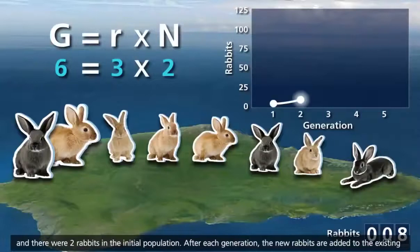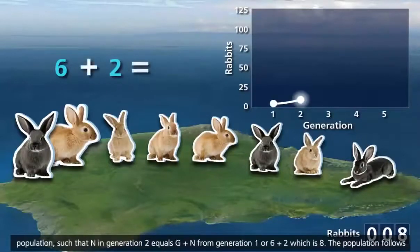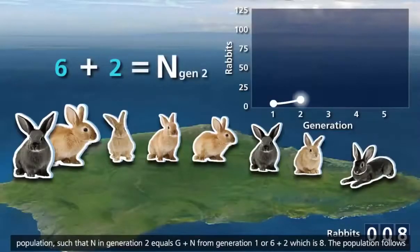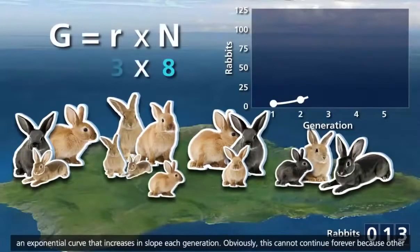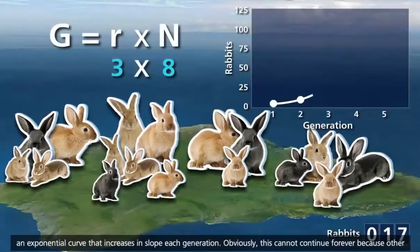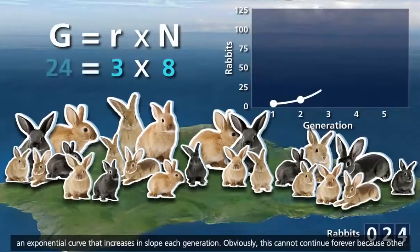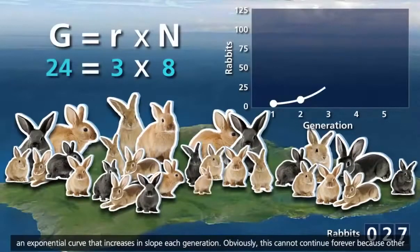After each generation, the new rabbits are added to the existing population, such that n in generation two equals g plus n from generation one, or six plus two, which is eight. The population follows an exponential curve that increases in slope each generation.